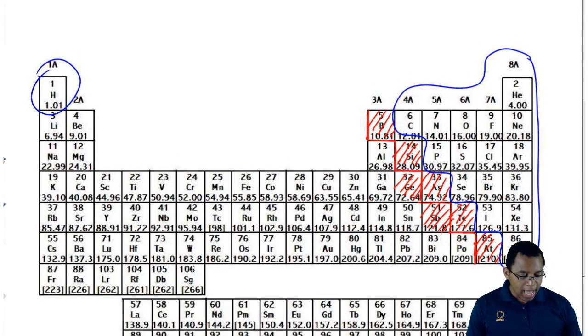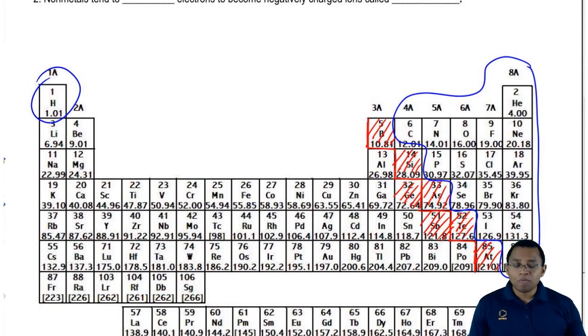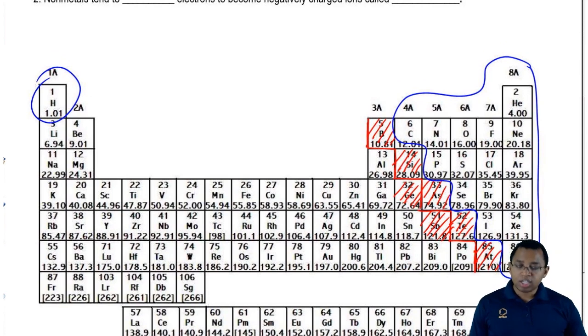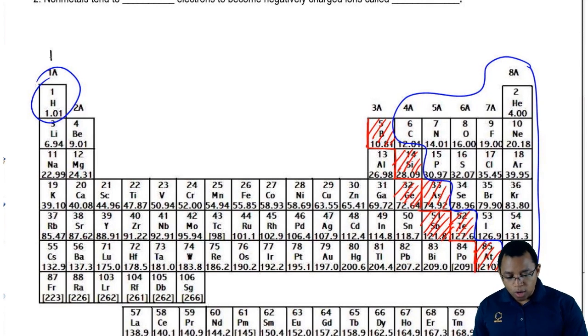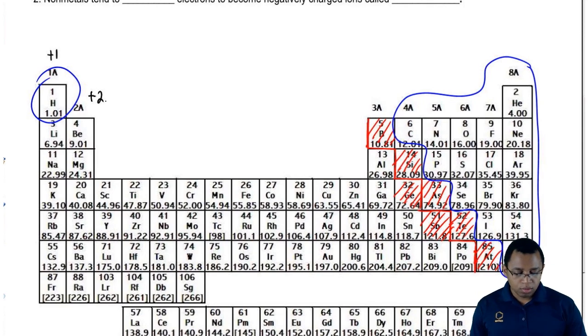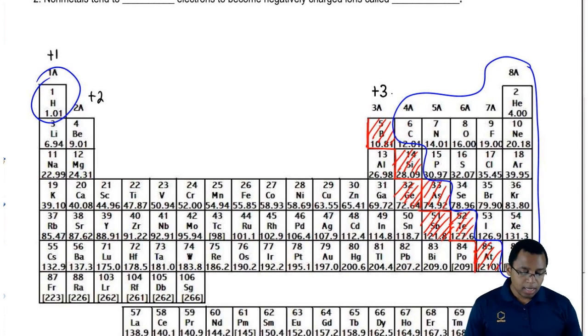We have main group metals. The charge of group 1A is plus 1, group 2A is plus 2, and group 3A is plus 3.